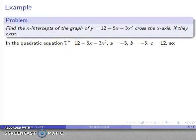So there's my quadratic equation. y, 0 equals 12 minus 5x minus 3x squared. a is the coefficient of x squared. Notice that I can use a negative coefficient. That's not a problem.